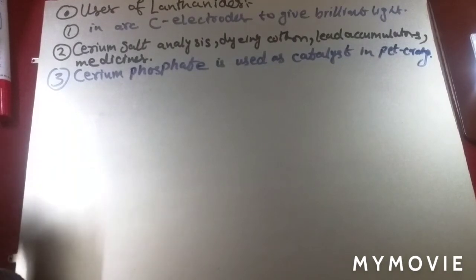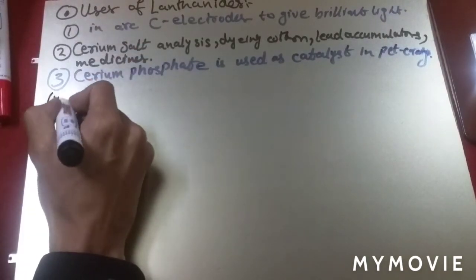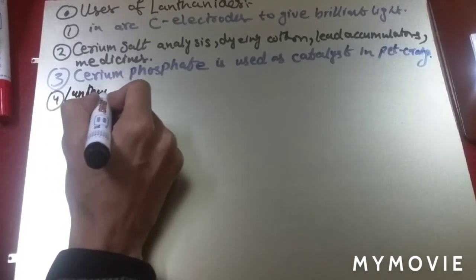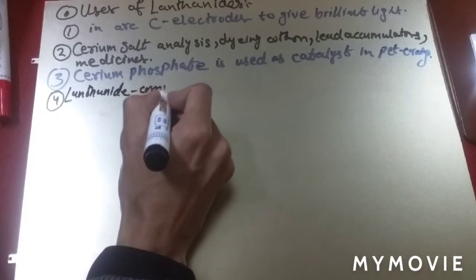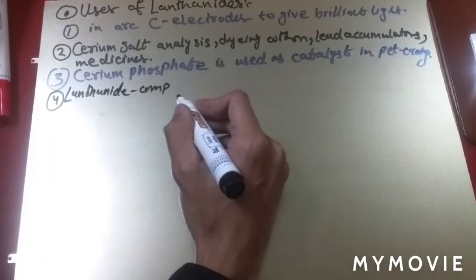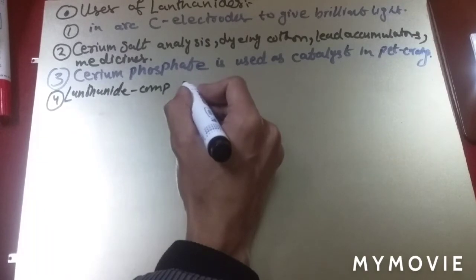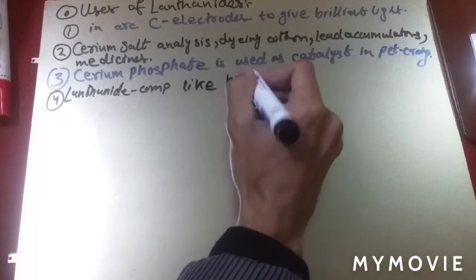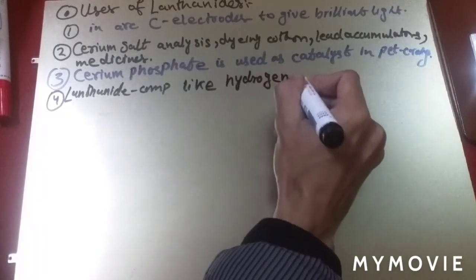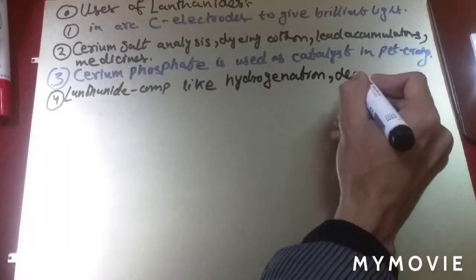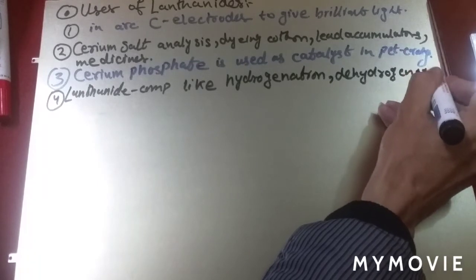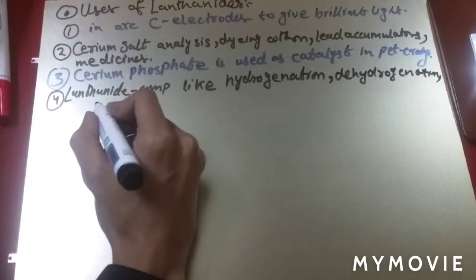Fourthly, lanthanide compounds are used as good catalysts in a number of reactions like hydrogenation, dehydrogenation, oxidation, and cracking of petroleum.